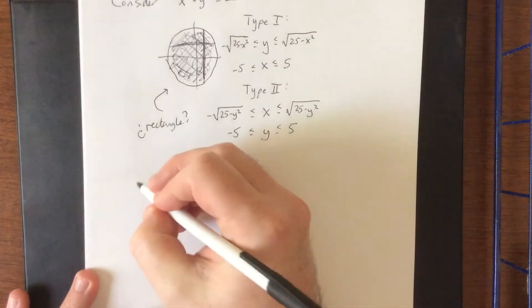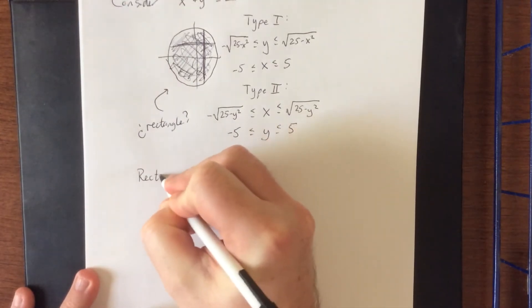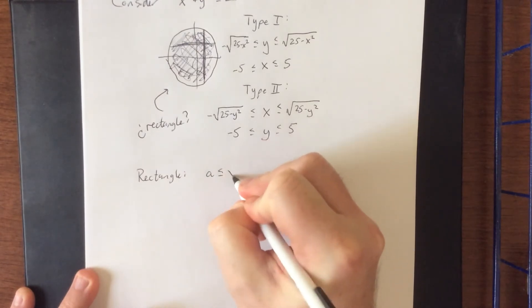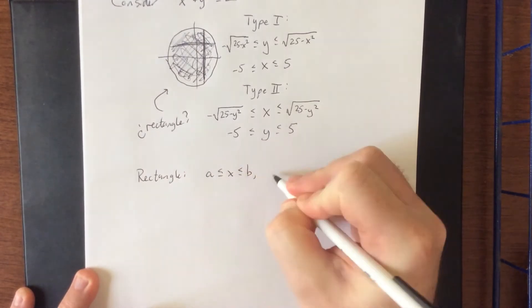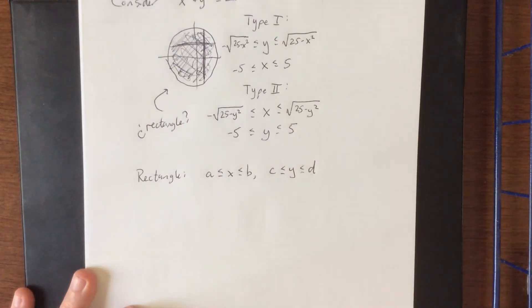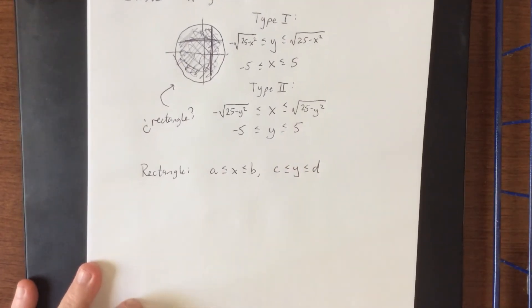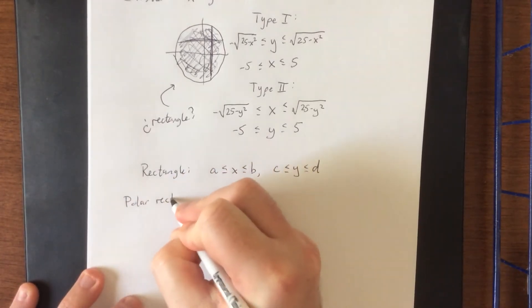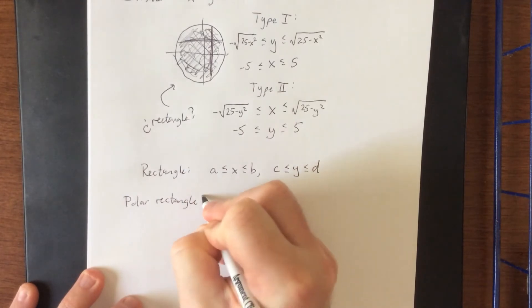Well, the idea behind a rectangle is that you allow x to be in between two constants, and you allow y to be in between two constants. This was the way that we defined a rectangular region back a couple sections ago. Well, what I'm going to let you know is that we're going to introduce what is known as a polar rectangle.